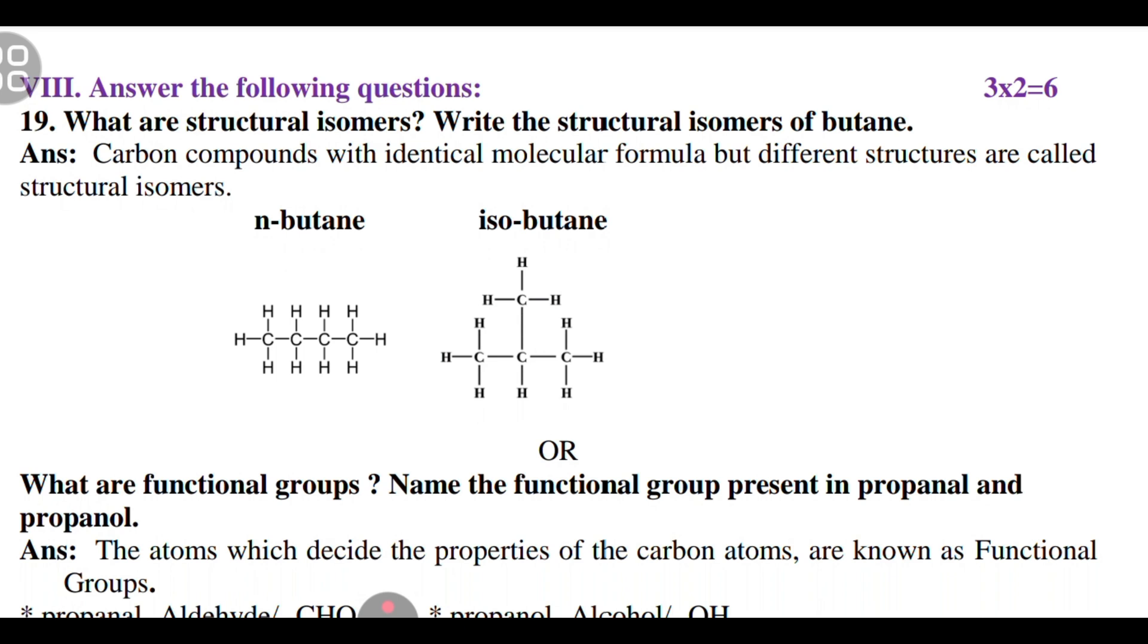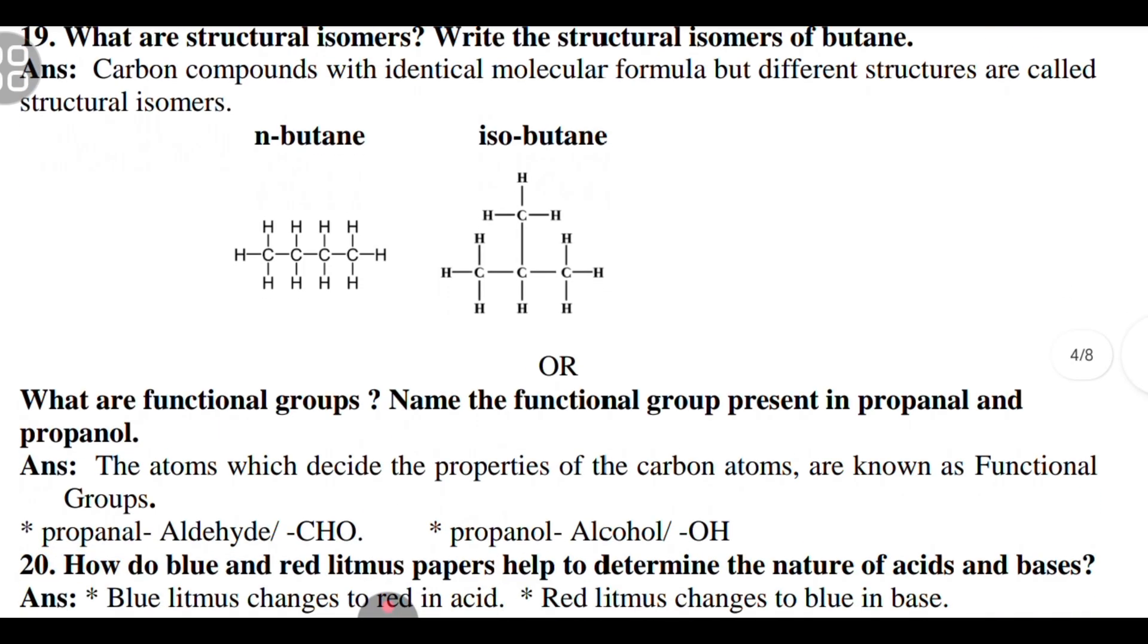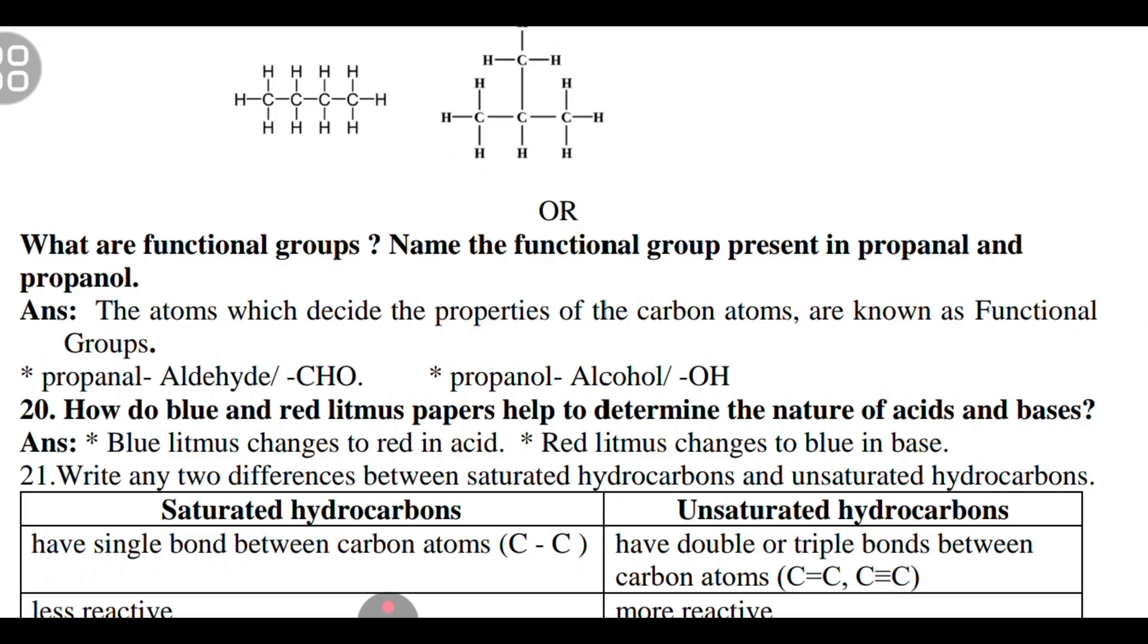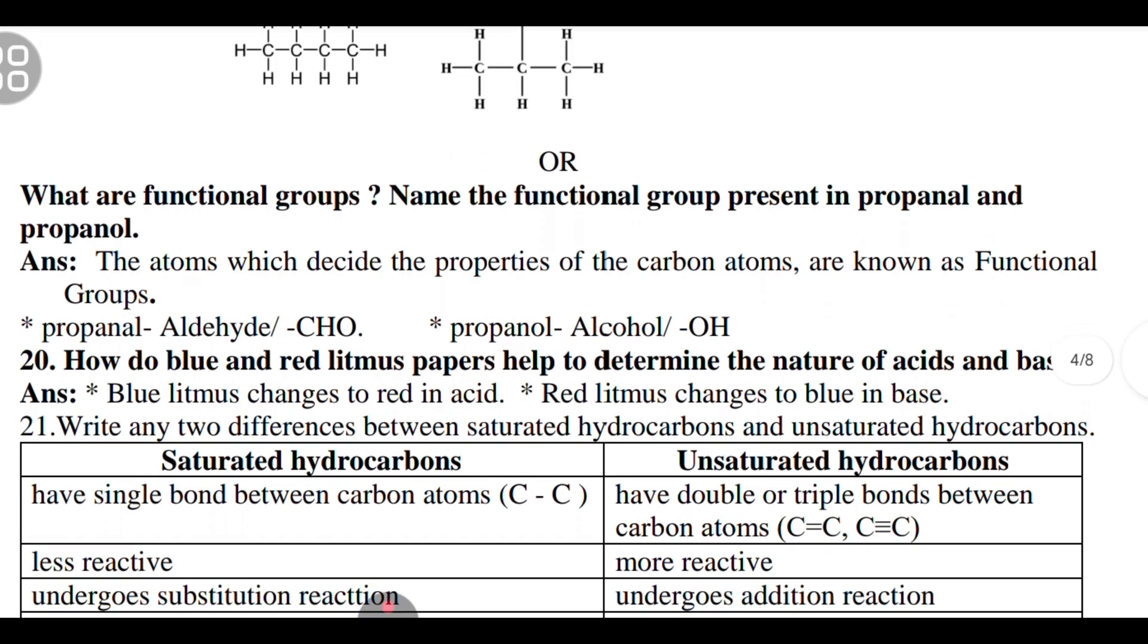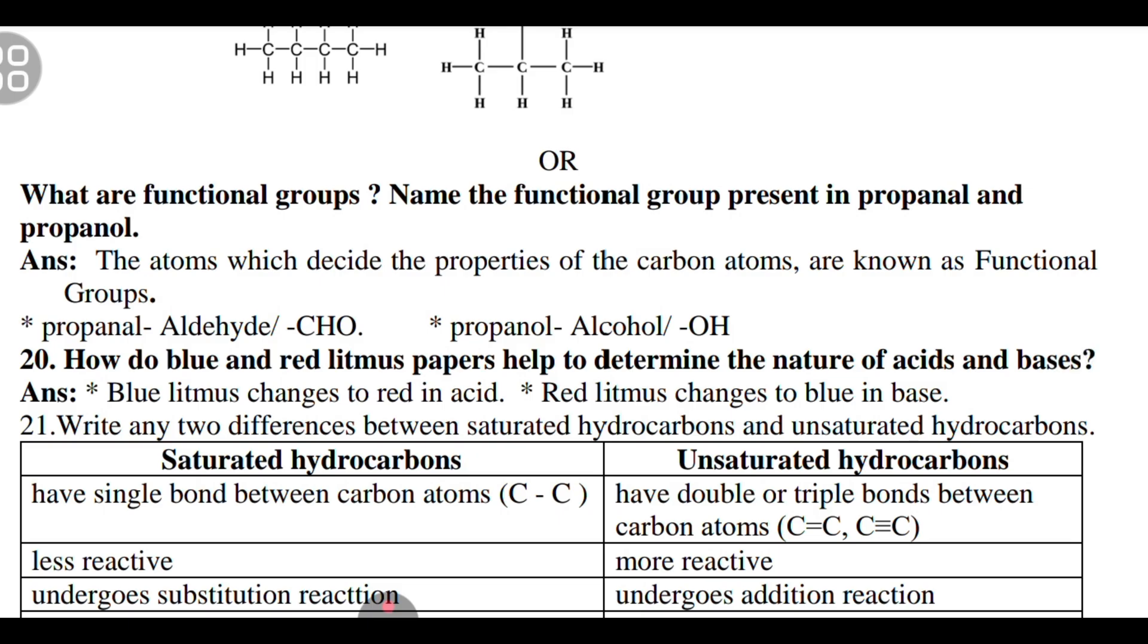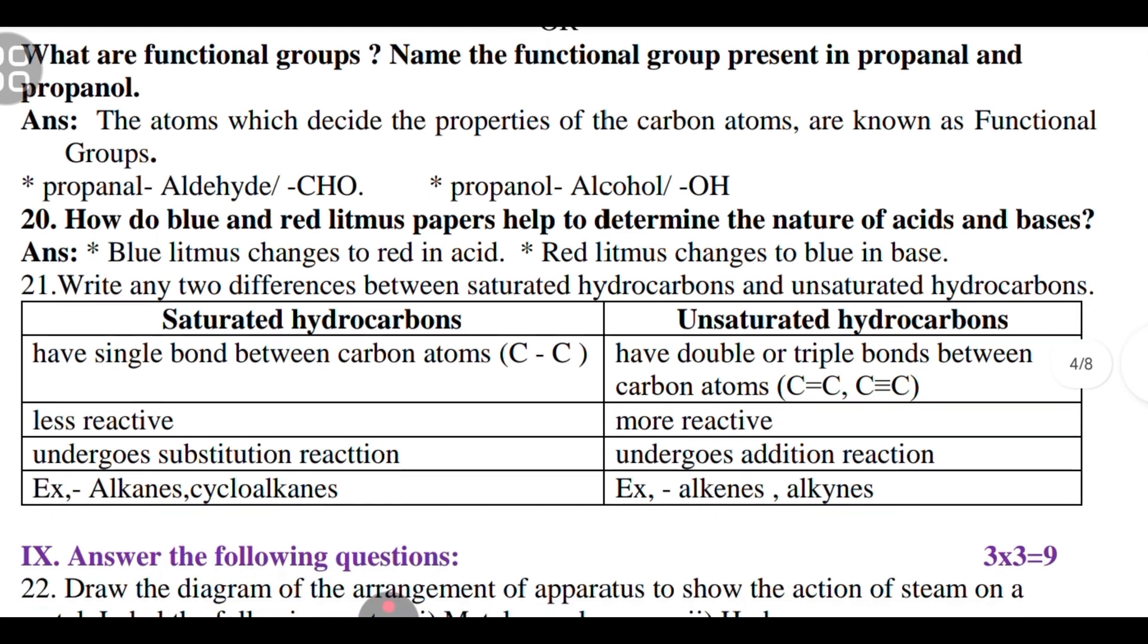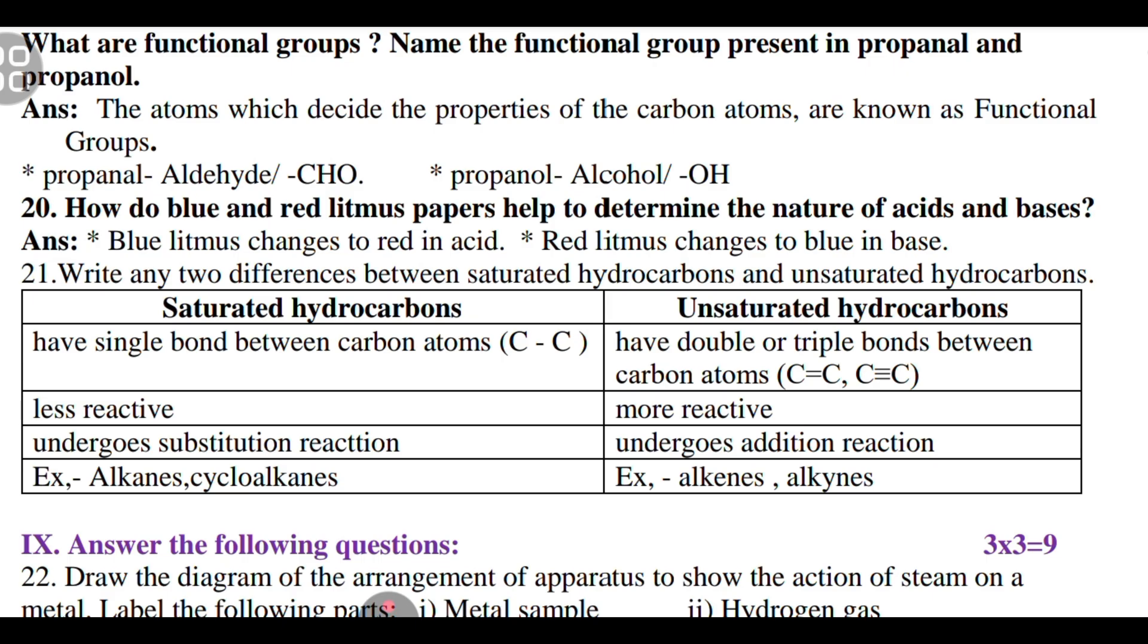Eighth main, answer the following question. What are the structural isomers? Write the structural isomers of butane. Carbon compounds with identical molecular formula but different structure are called structural isomers. These are the structures for n-butane and isobutane. What are the functional groups? Name the functional group present in propanal and propanol. This question is important for your preparatory and SSLC examination 2026.